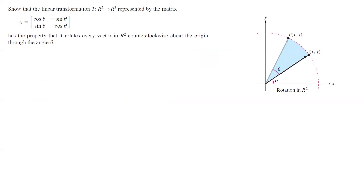The next linear transformation is very interesting. It maps the plane to the plane and takes vectors and rotates them. The matrix A is defined by cosine θ, negative sine θ, sine θ, and cosine θ. It rotates every vector counterclockwise about the origin. On the exam, if I ask you to identify the matrix representing a linear transformation that rotates vectors in the plane counterclockwise about the origin, you can use this matrix.